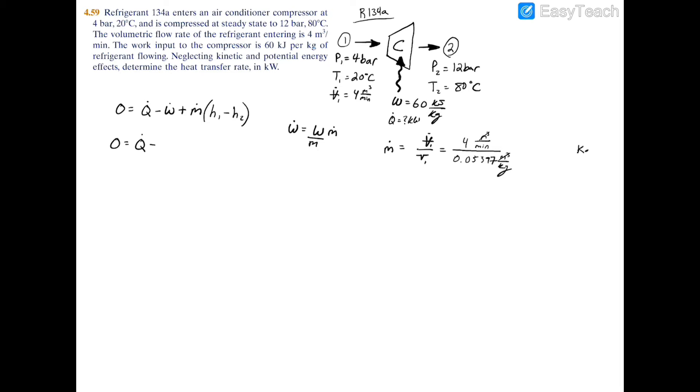And if you plug this into your calculator, you'll have 74.1152 kilograms per minute. So if you just divide this by 60 to get into kilograms per second, you'll have 1.2353 kilograms per second. So that's your mass flow rate.